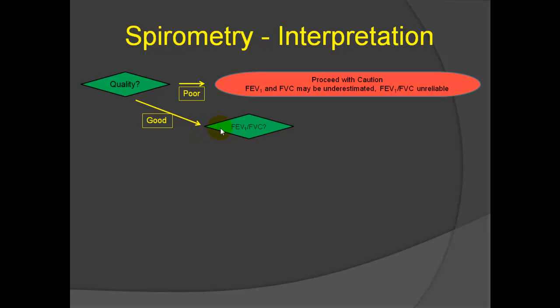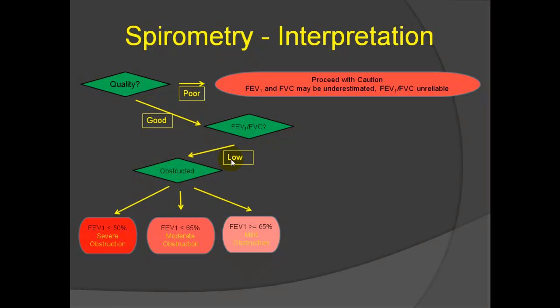Once the quality is good, I recommend that the interpreter starts with the FEV1 over FVC ratio as the first thing to look at. We define obstruction as a low FEV1/FVC ratio, so if it's low, the patient's obstructed. Once we see there's obstruction, we generally grade the obstruction as mild, moderate, or severe based on how low the FEV1 compares to normal. For example, if it's preserved over 65%, most pulmonologists will say mild. If it's under 65%, moderate, and if it's under 50%, severe, and if it's under 35% to 40%, we might even say very severe.